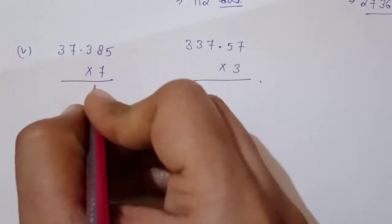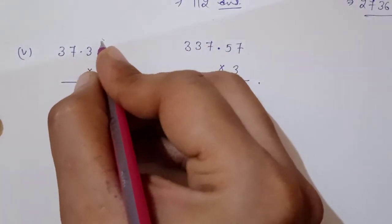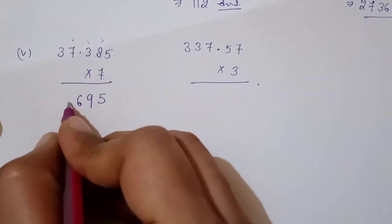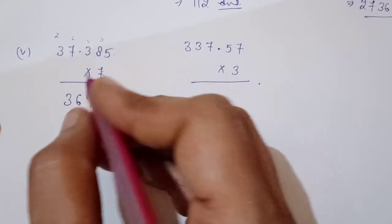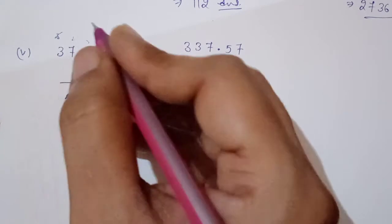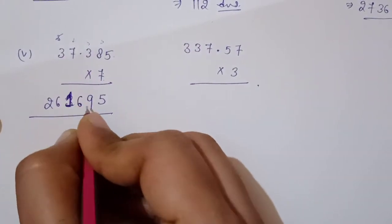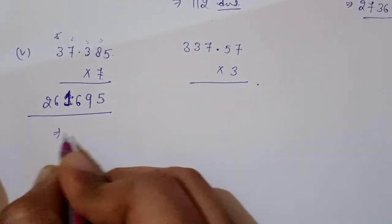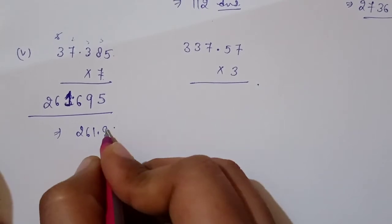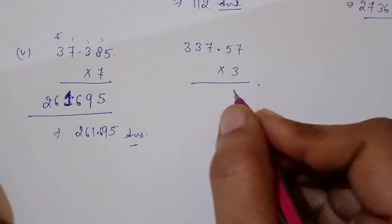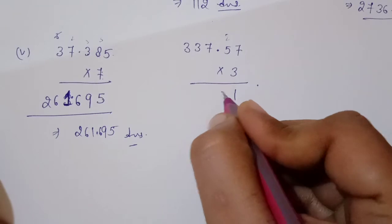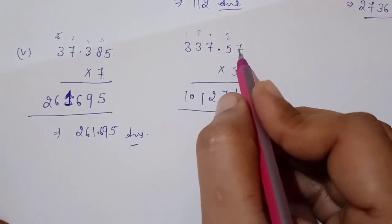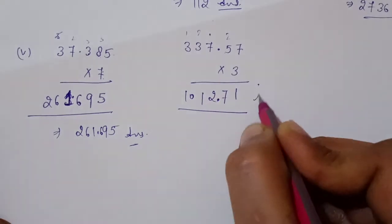Now 37.385 × 7: 7×5=35, 7×8=56, 7×3=21; 7×7=49, carry gives 51; 7×3=21, 26, 261. Then 37.57 × 3: 3×7=21, 3×5=15, 3×7=21, 3×3=9. For 261.695: three decimal places — count one, two, three from the right. For the last one: two decimal places — count one, two.